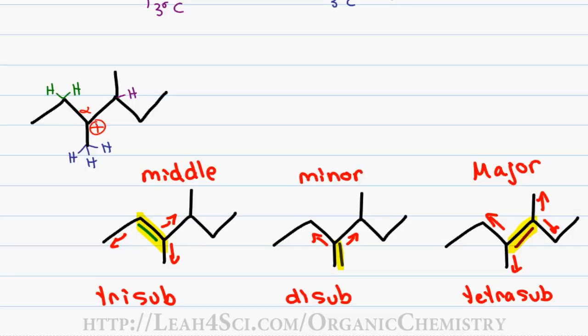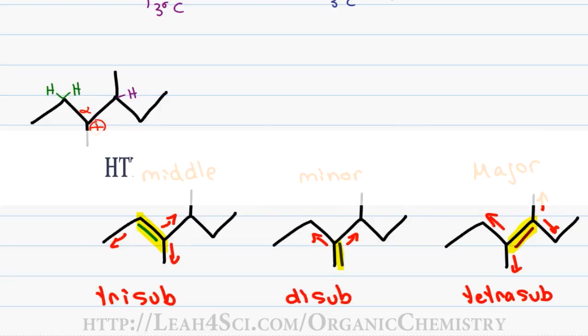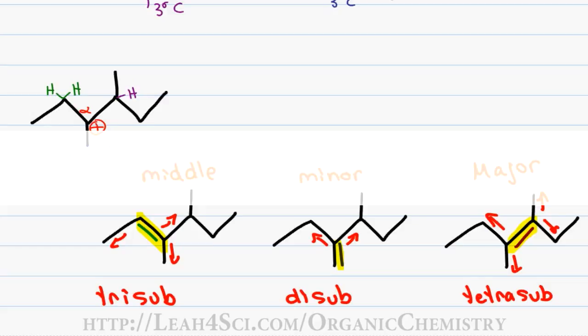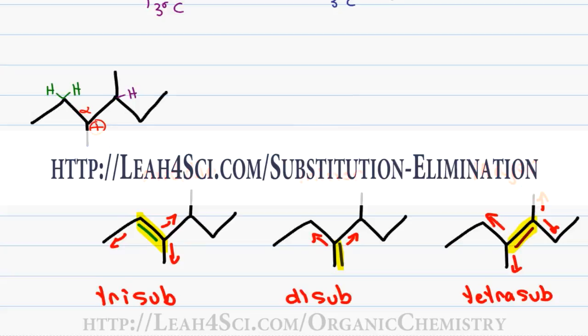So the key here once again is to figure out what's your most stable product but not to forget that in an E1 reaction you can have a carbocation rearrangement and the product may be completely unexpected. I work through many more examples ranging from easy and tricky E1 reactions in my online membership site. You can find information at studyhall.leah4sci.com/join. You can also catch my entire series on substitution and elimination on my website leah4sci.com/substitution-elimination.